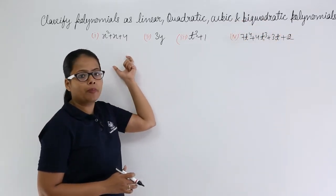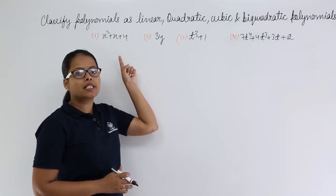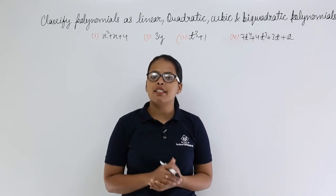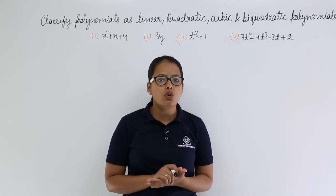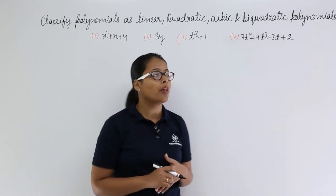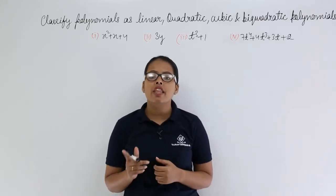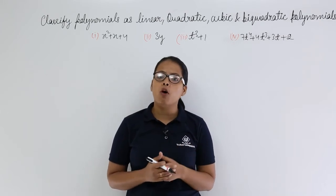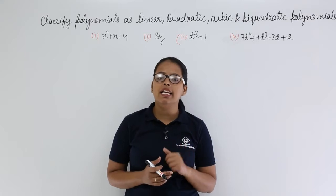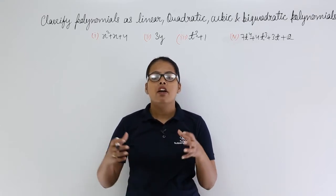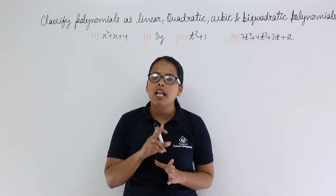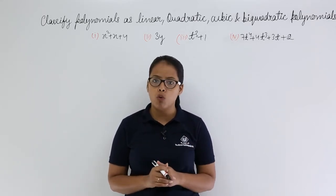Let's take our first problem which is x squared plus x plus 4. If the highest power of x in the expression is 2, then that equation is quadratic. If the highest power of x is 3, then it is a cubic polynomial. If it is 1, then it is linear. And bi-quadratic occurs when you multiply two quadratic equations, so the highest power in the expression becomes 4.